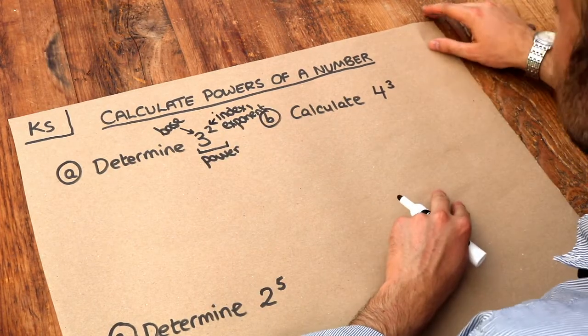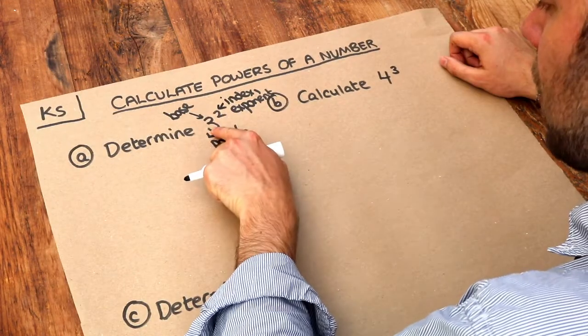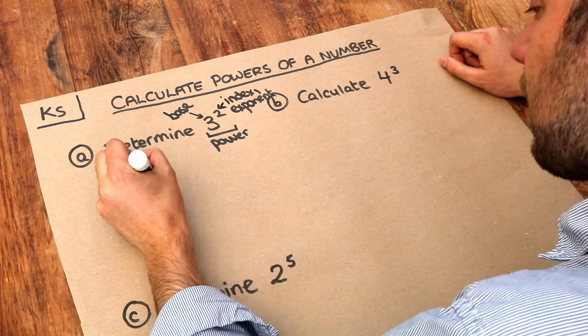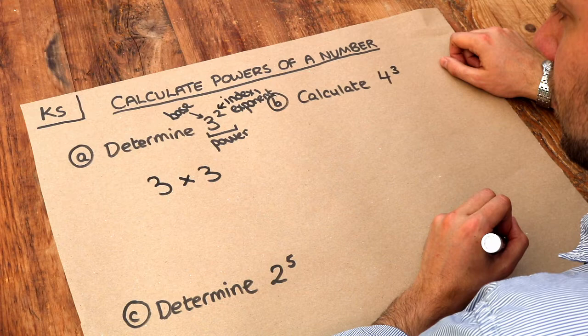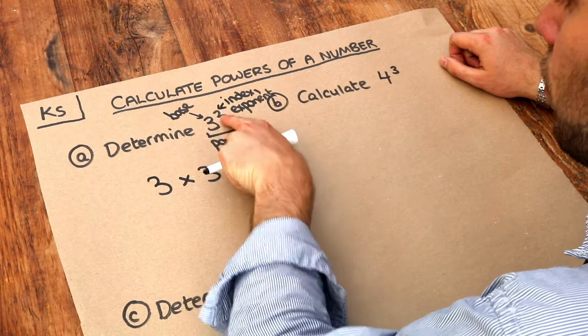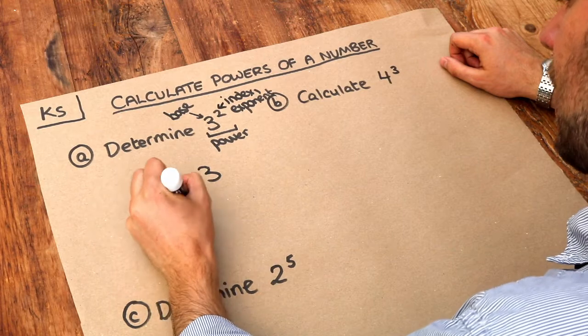Now this might all seem complicated but calculating it is not too bad. And all it means is that we write the number 3 two times, so 3 two times, and multiply them together. So we have 2 threes being multiplied together. And 3 times 3 is 9.